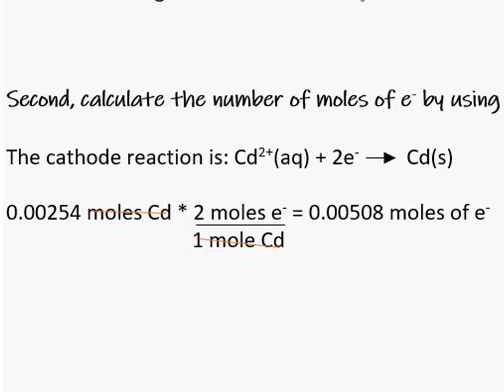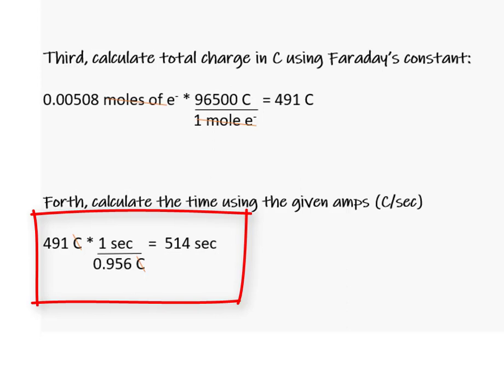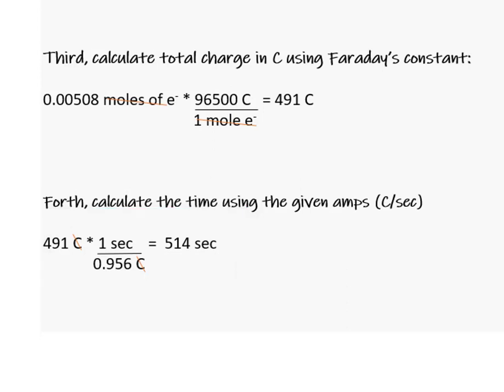The moles of cadmium metal are the same as the moles of cadmium ion. We convert the moles of cadmium metal to moles of electrons, considering the two-to-one ratio in the half-reaction. Then we convert the moles of electrons to coulombs using Faraday's constant. Finally, we calculate the time by dividing the coulombs by the current.